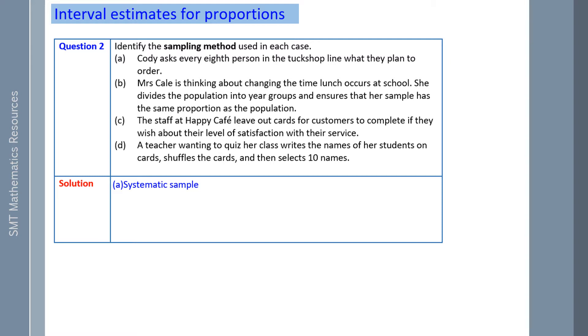Mrs. Carl is thinking about changing the time lunch occurs at school. She divides the population into year groups and ensures that her sample has the same proportion as the population. This is a stratified random sample because she's trying to get the proportions to match the population.